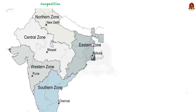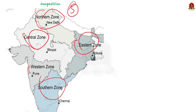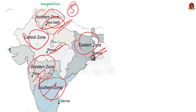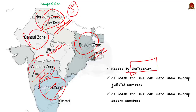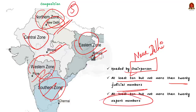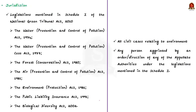The tribunal shall not be bound by the procedure laid down under the Code of Civil Procedure 1908, but shall be guided by principles of natural justice. Its orders are binding and it has power to grant relief in the form of compensation to affected persons. The tribunal has a presence in five zones — north, central, east, south and west. The principal bench is in the north zone, headquartered in Delhi; the central zone bench is in Bhopal; east zone in Kolkata; south zone in Chennai; and west zone in Pune. The tribunal is headed by the Chairperson and has at least 10 but not more than 20 judicial members, and at least 10 but not more than 20 expert members.